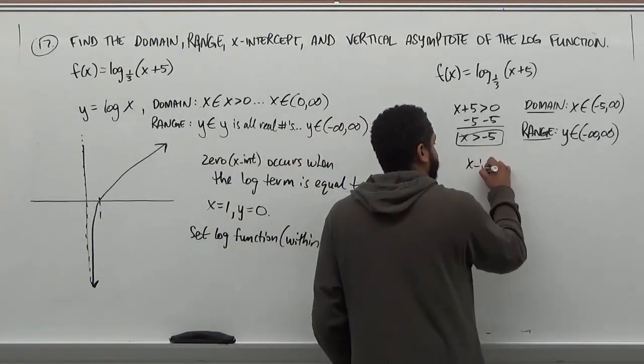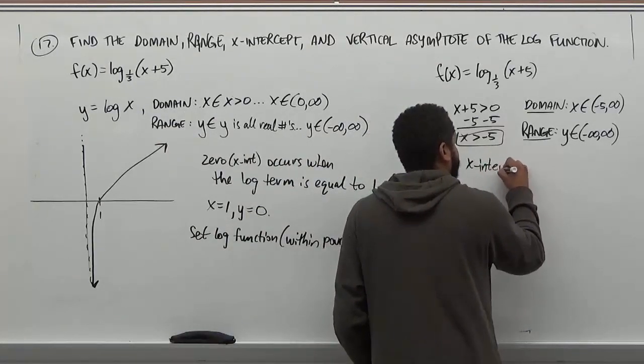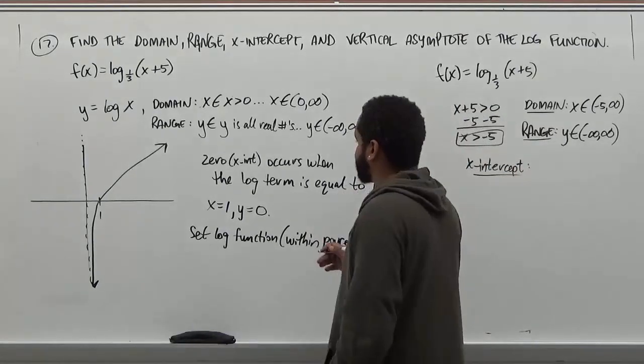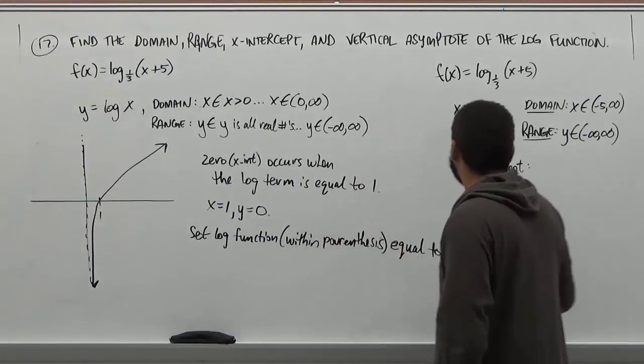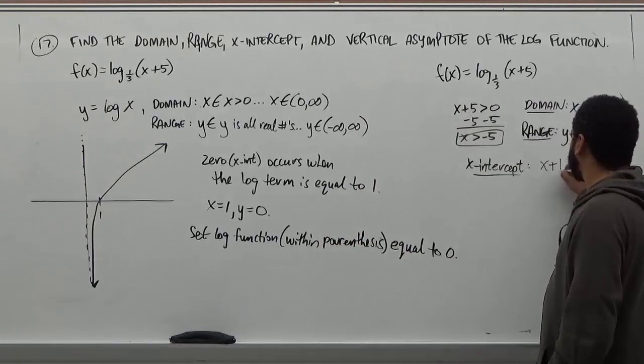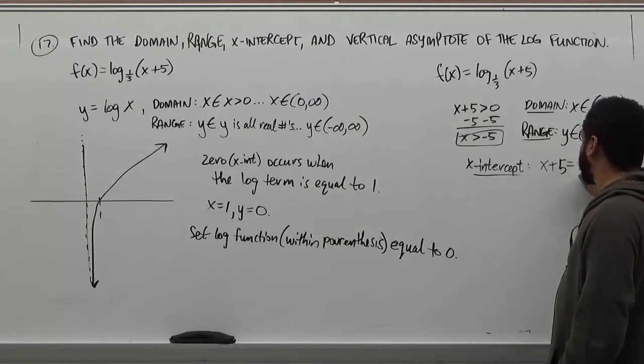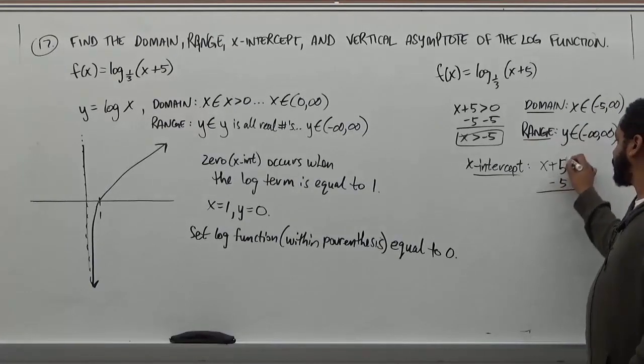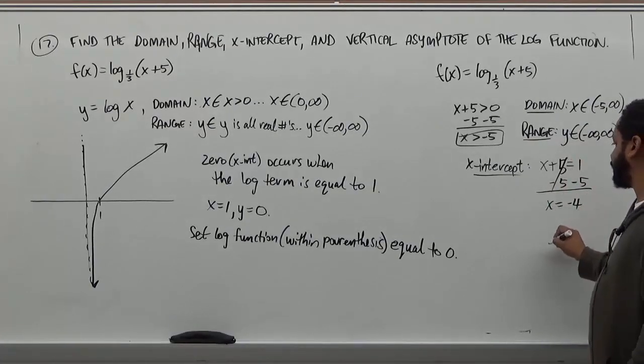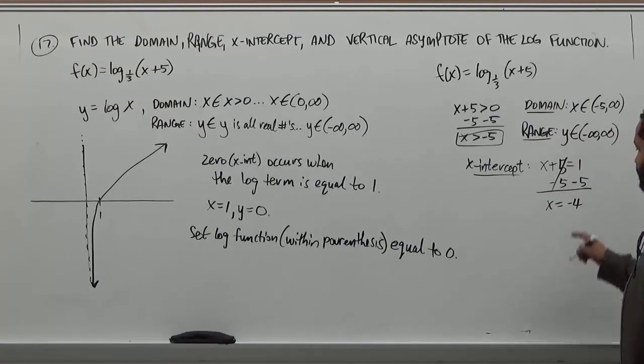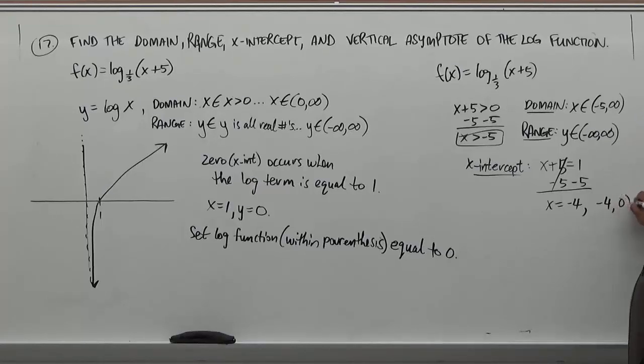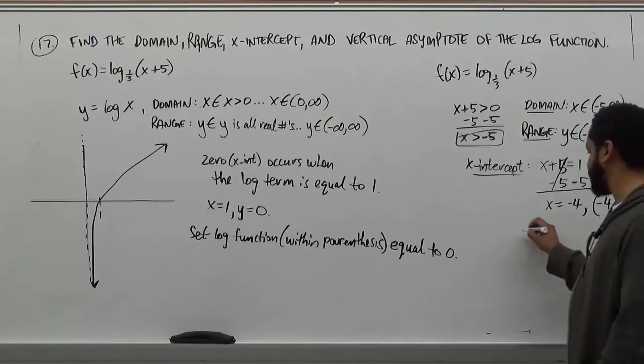Now the x-intercepts, we can solve when the logarithm of the inside is equivalent to one. So we take the x+5, we set it equal to one, and we solve this. So we subtract five, and we get x is equivalent to -4. So the x-intercept is going to be (-4, 0). This is our x-intercept.